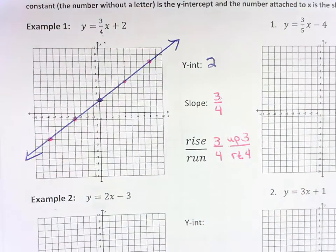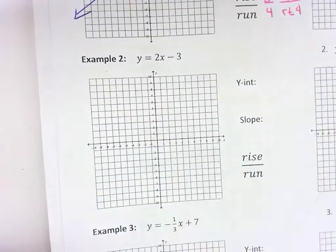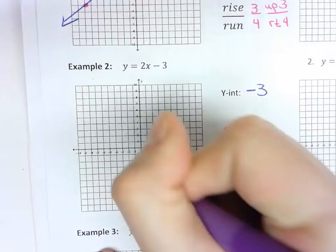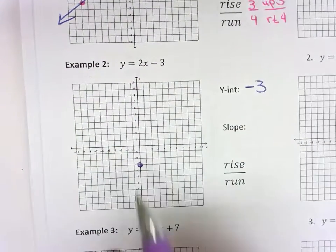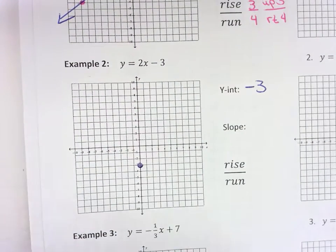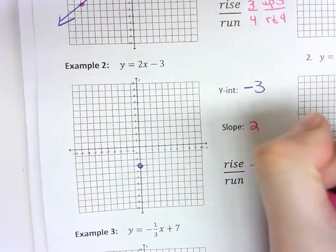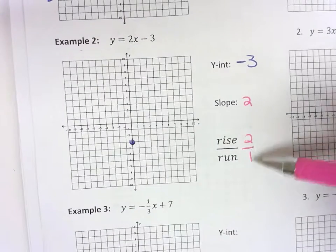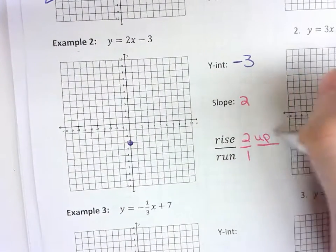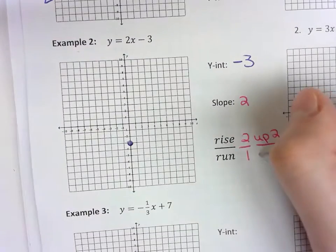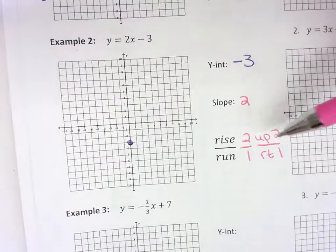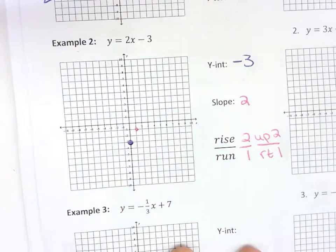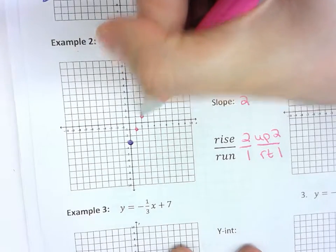For example number 2, the y-intercept is still the number that's all by itself. In this case, that's negative 3 — take the sign that's in front of it. So we're going to start at negative 3 on the y-axis. Now my slope is a positive 2. Any time you have a slope that's not a fraction, put a 1 on the bottom, because 2 divided by 1 is still 2. Now we can see: after we go up 2, we're going to go over to the right 1. Count up 2 and over to the right 1, put your point. Up 2, over to the right 1, put your point.